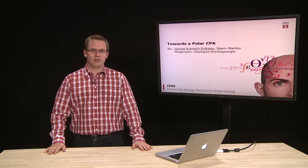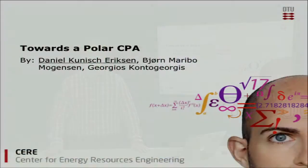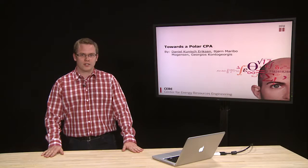My name is Daniel Eriksson and I'm here to talk to you about constructing a polar type CPA equation of state. This work has been carried out together with PhD student Bjørn Mai Bomonsen and Professor Georgios Kontogiorgis.